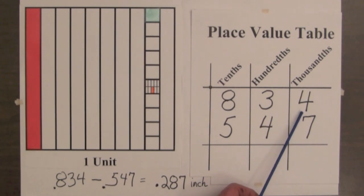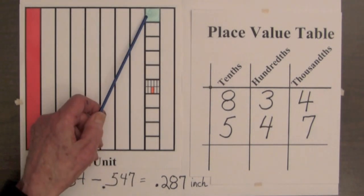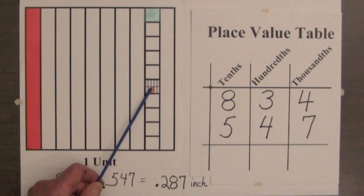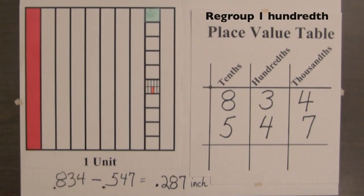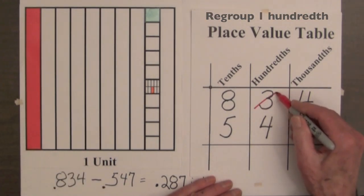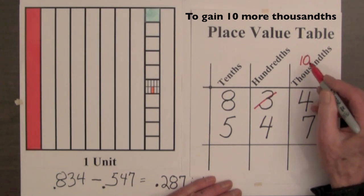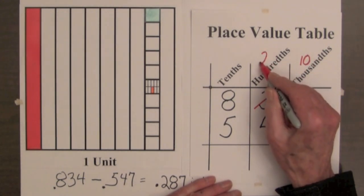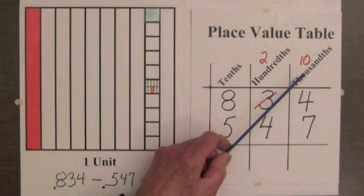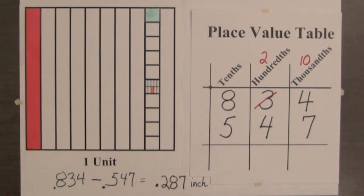But we only have 4 thousandths. Now we know that 1 hundredths is equal to 10 thousandths. So we regroup 1 hundredths to obtain 10 more thousandths. And that leaves us with 2 hundredths in the hundredths column. Now 10 thousandths plus 4 thousandths is 14 thousandths minus 7 thousandths is 7 thousandths.